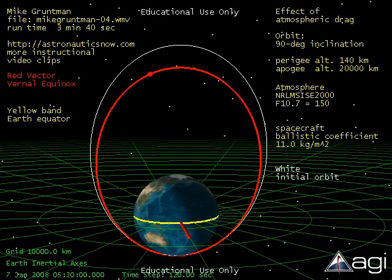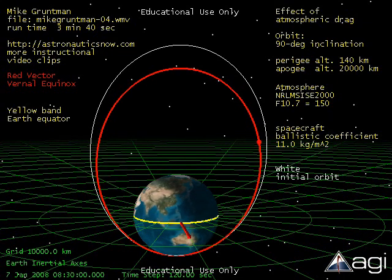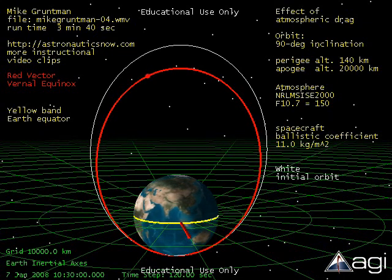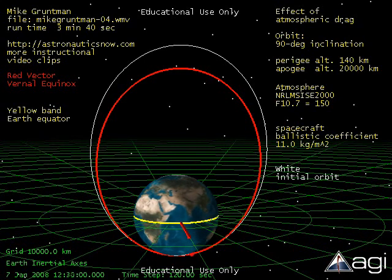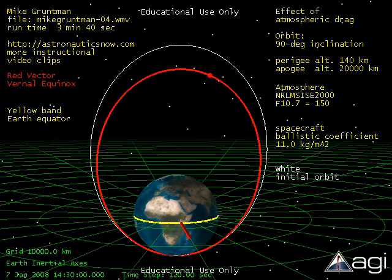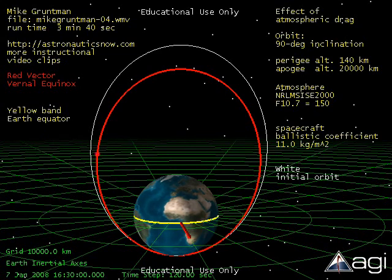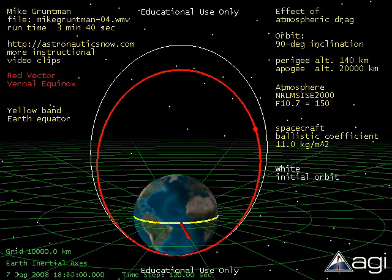Atmospheric density at a given altitude significantly depends on the level of solar activity. In our example, we assume conditions corresponding to moderate solar activity with the F10.7 flux equal to 150.